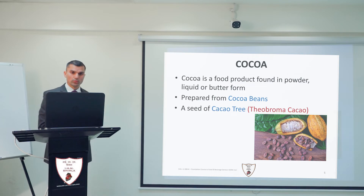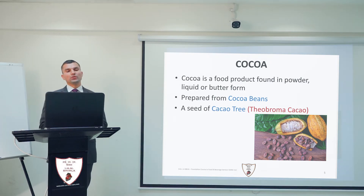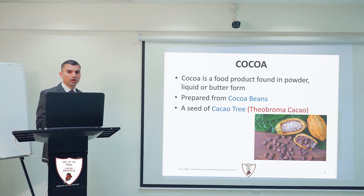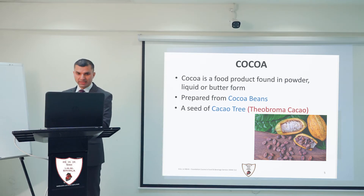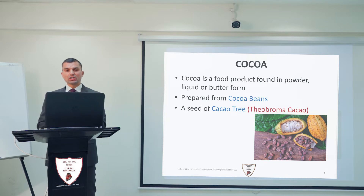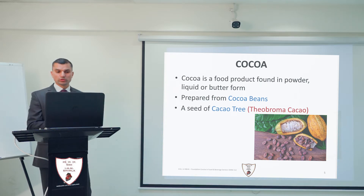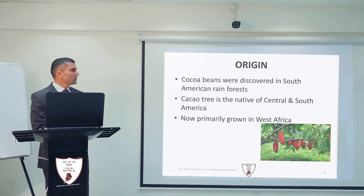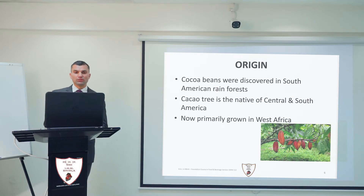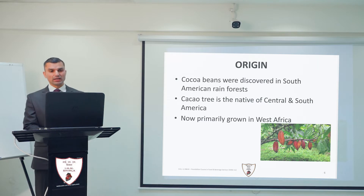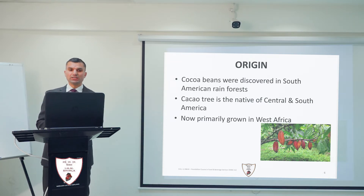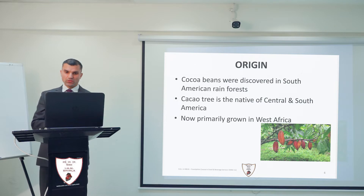Let's begin with Cocoa. Cocoa is a food product which is found in the form of powder, liquid or butter, and it is prepared from Cocoa beans. These beans come from the Cacao tree, also known as Theobroma cacao. These beans were discovered in South American rainforests, and Cacao trees are native to Central and South America. At present, these are primarily grown in West Africa.